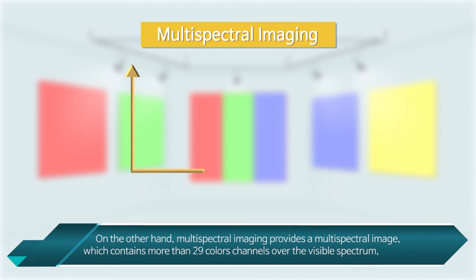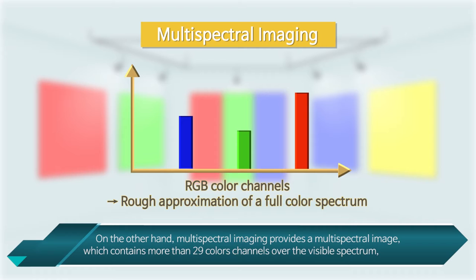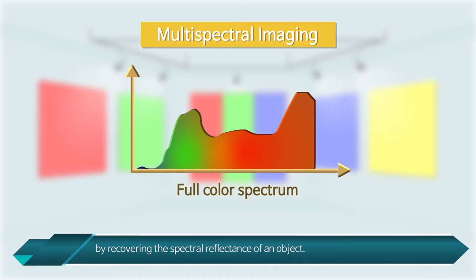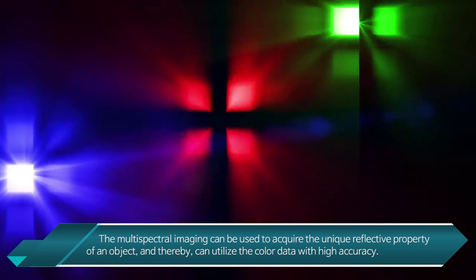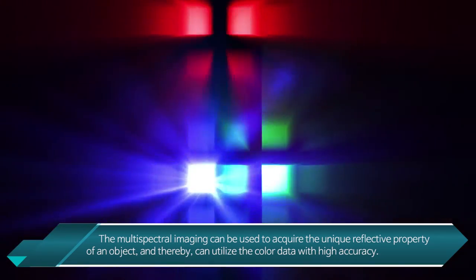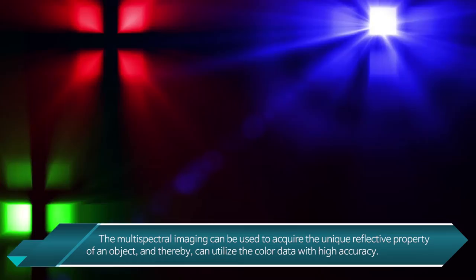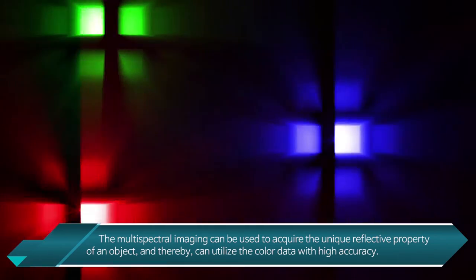On the other hand, multispectral imaging provides a multispectral image which contains more than 29 color channels over the visible spectrum, by recovering the spectral reflectance of an object. The multispectral imaging can be used to acquire the unique reflective property of an object, and thereby can utilize the color data with high accuracy.